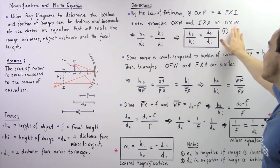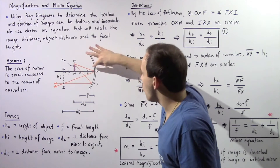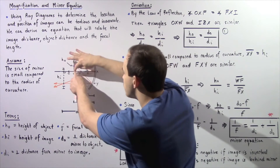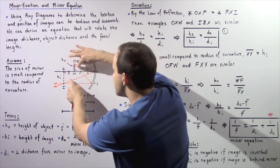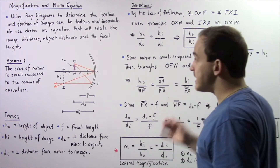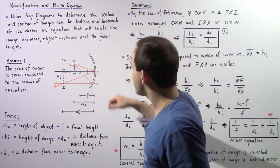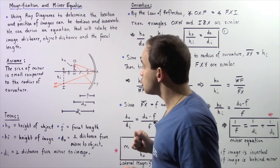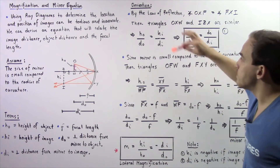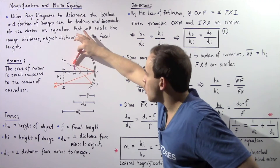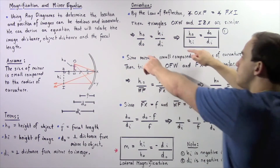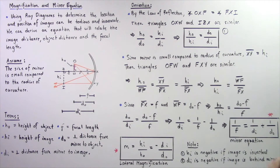Triangles OXW and IZX are similar triangles. Because they have 90-degree angles and the same angles, we can take the ratio of one side to another. That means HO divided by DO is equal to HI divided by DI — the ratio of the height to the base of the first triangle equals the ratio of the height to the base of the second triangle. Rearranging, we get HO divided by HI equals DO divided by DI. Let's call this Equation 1.